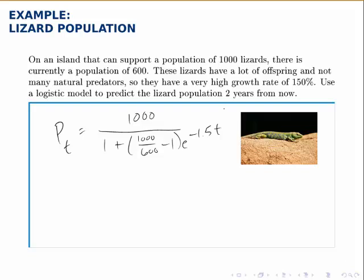We can simplify what's in parentheses there. 10 over 6 is the same as 5 over 3, and subtracting 1, that is 2 over 3, so that in parentheses in the denominator simplifies to 2 thirds.